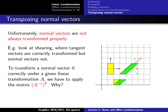We often need normal vectors for lighting calculations. Unfortunately, applying a transformation matrix to a normal vector doesn't always work correctly. For example, with shearing, applying the transformation matrix to a normal vector doesn't change its direction correctly — the result points in the wrong direction. We need to do something special here.